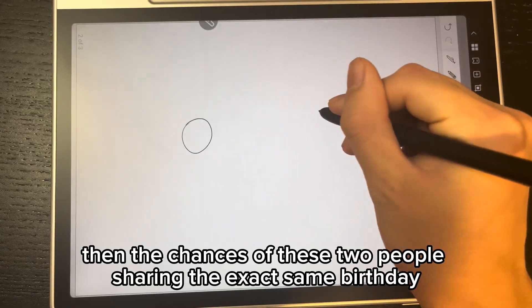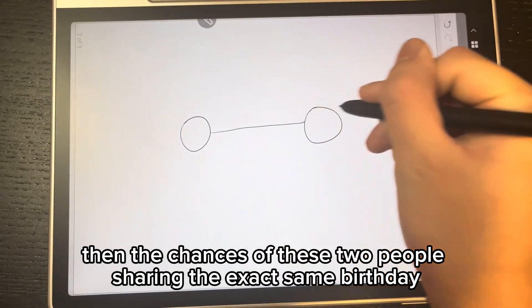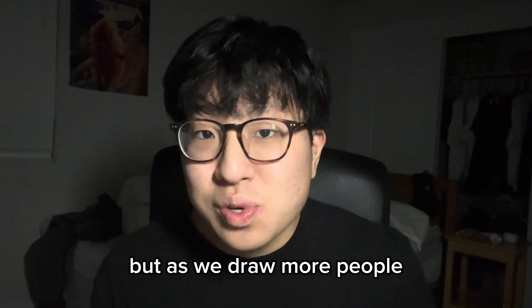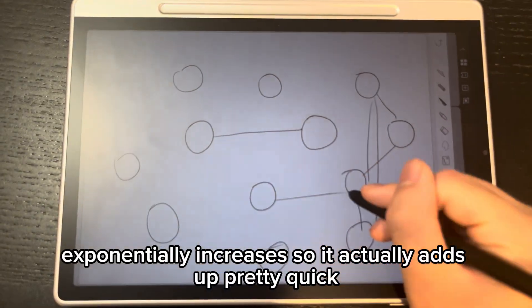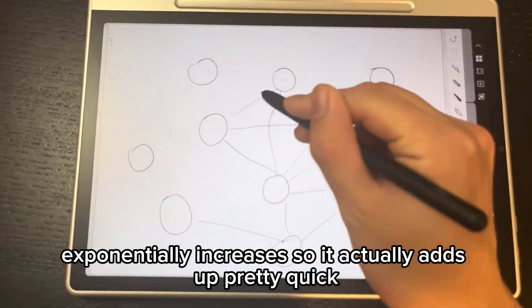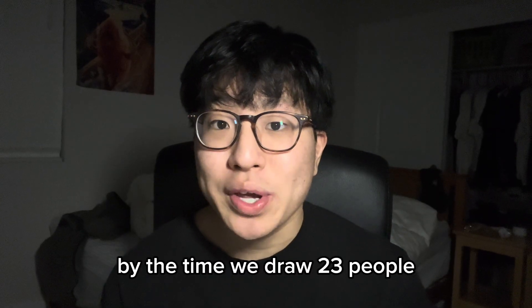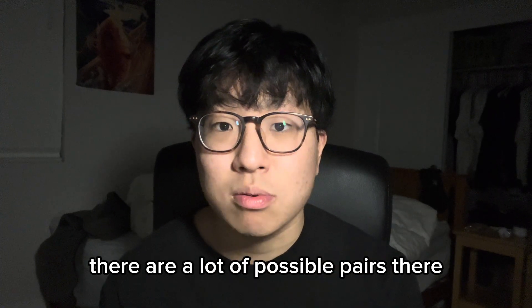Now, if we draw 2 people, then the chances of these 2 people sharing the exact same birthday are very, very low. But as we draw more people, the possible pairs of 2 people sharing the same birthday exponentially increases, so it actually adds up pretty quick. By the time we draw 23 people, there are a lot of possible pairs,